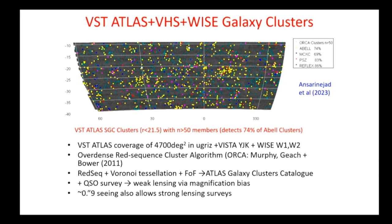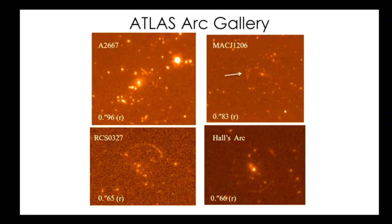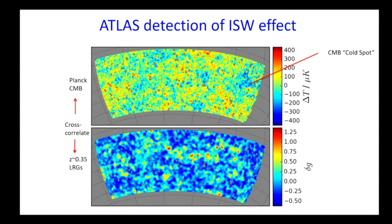We're also using this cluster catalogue for weak lensing via magnification bias — looking at how clusters lens background quasars to measure cluster masses. The 0.8 arcsecond seeing also allows gravitational lensing arcs to be detected. Various papers have appeared on lens detection, and these previously detected arcs visible in ATLAS data — not as deep as KiDS — demonstrate the value of the good seeing. Some arcs visible at SDSS or ATLAS depth with 0.66 arcsecond seeing wouldn't be seen at double that.